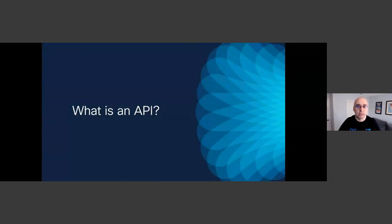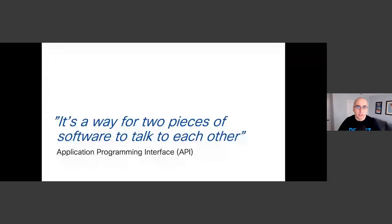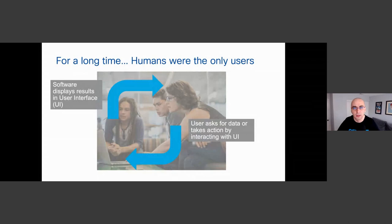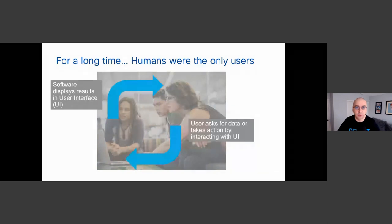What is an API? You can think of an API, or Application Programming Interface, as a way for two pieces of software to talk to each other. For the longest time, humans were the only users of computer interfaces — users asking for data or taking actions by interacting with the user interface provided by a laptop, personal computer, or server. Humans were interacting and getting data back from the software they were using.